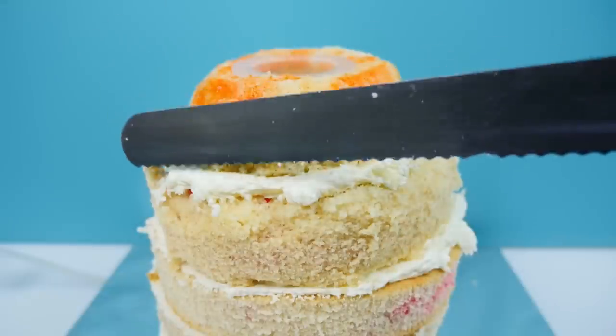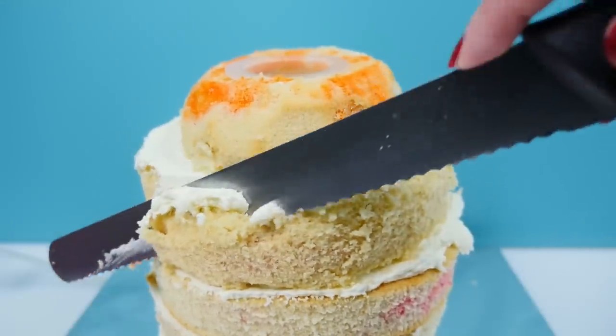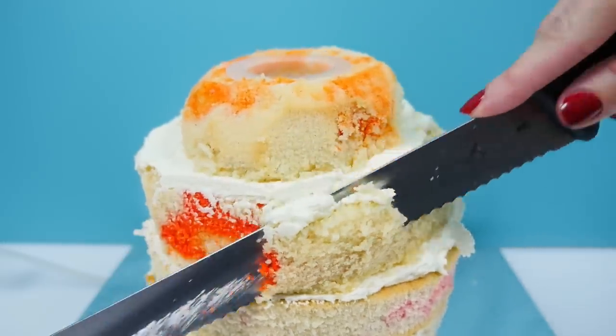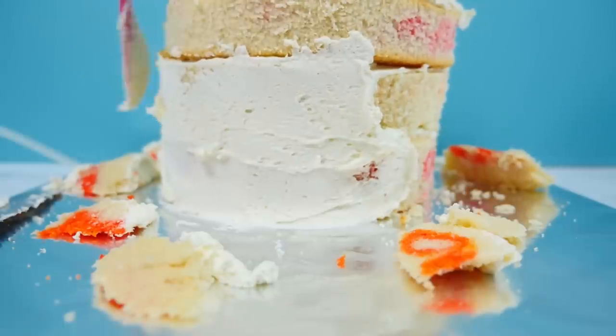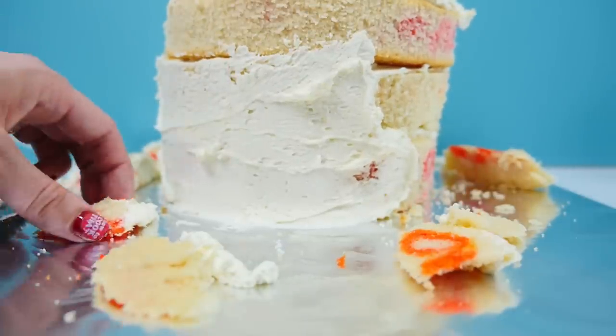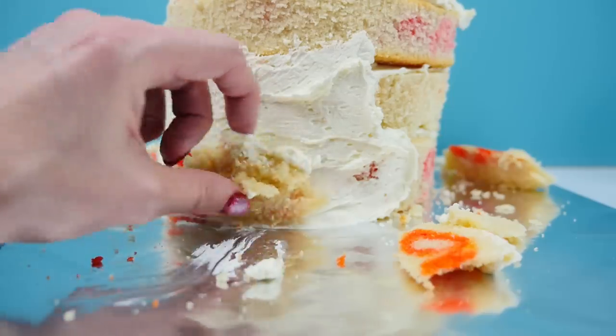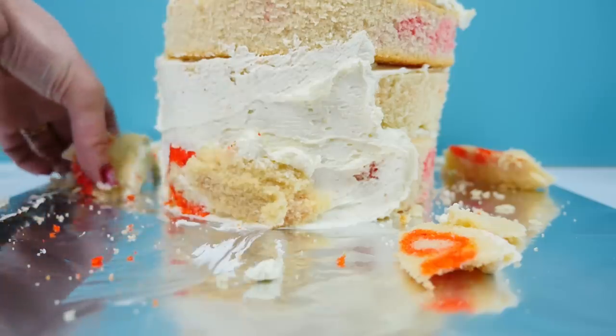Then grab your knife and trim off some of the excess cake so you have a nice slope down from the top of the volcano. Add some buttercream to the bottom and use those off cuts that you've just made to build up around the bottom of the volcano. And you can also use the circles from the middle of the cake too so that nothing is wasted.